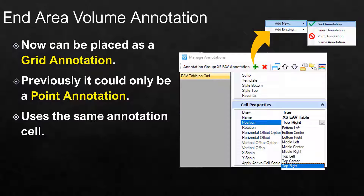So now this can be placed as a grid annotation, where previously it could only be placed as a point annotation. If you did use point annotations, they will still work — it still uses the same annotation cell. This just opens you up to be able to handle more complex situations.